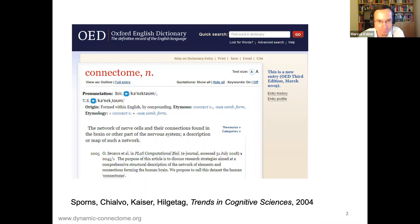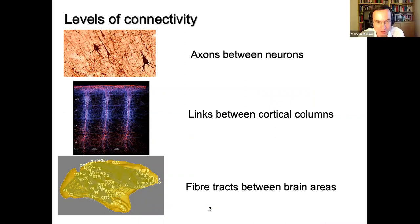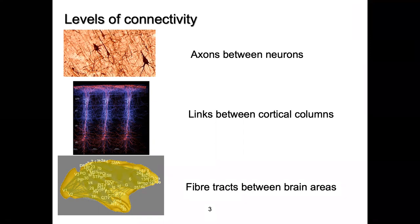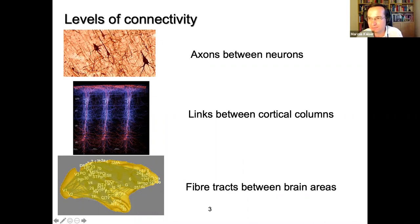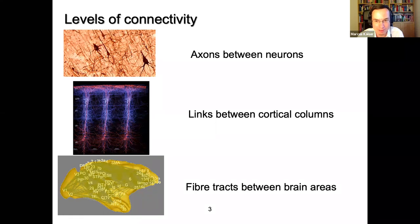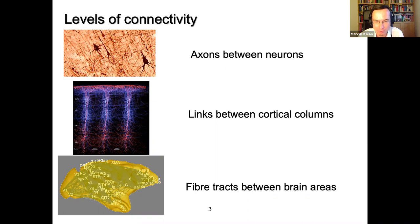You can look at different levels of connectivity: connections between individual neurons via axonal connections, connections between patches of tissue such as links between cortical columns, or links between different parts of the brain via fiber tracts between brain regions. In this talk I will mostly focus on the level of fiber tracts between brain regions - the global connectivity of the brain.